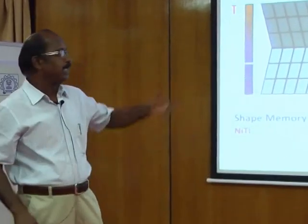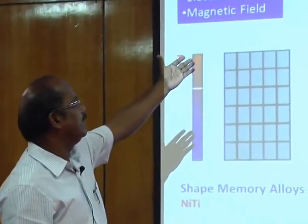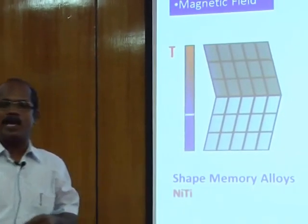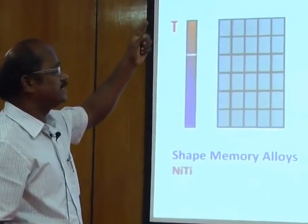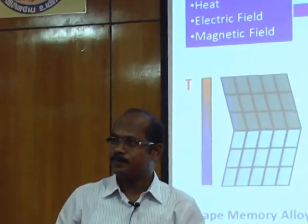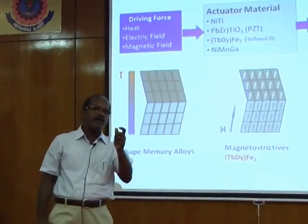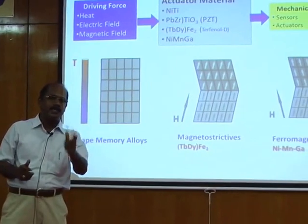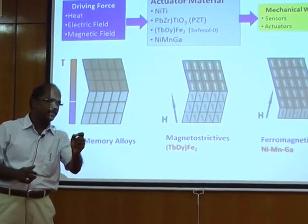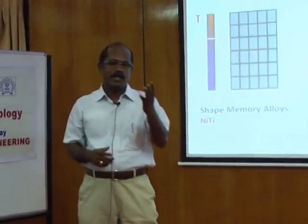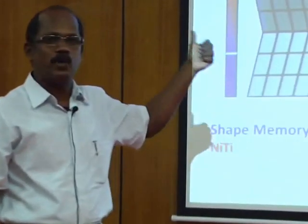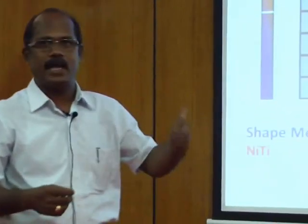This type of shape memory alloy can be classified into various materials like NiTi, PZT, Terfenol, and Nickel-Manganese-Gallium. In conventional shape memory alloys, the shape and dimension of the material can be changed by applying temperature. The ultimate aim of discovering any shape memory alloy is to generate strain. Nickel-Titanium is one of the conventional shape memory alloys which produces 8% strain, and this 8% strain can be used in the manufacturing of sensors and actuators.